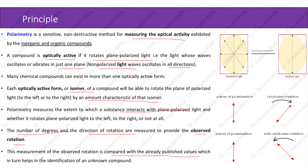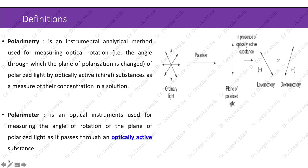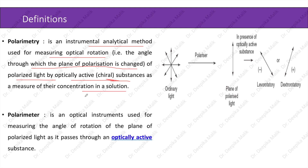This comparison helps in the identification of an unknown compound. Polarimetry is an instrumental analytical method used for measuring optical rotation — the angle through which the plane of polarization is changed — of polarized light by optically active or chiral substances, as a measure of their concentration in a solution. A polarimeter is an optical instrument used for measuring the angle of rotation of the plane of polarized light as it passes through an optically active substance.